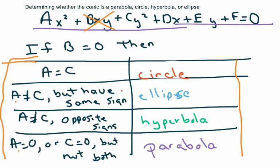So if A equals C, it's a circle. If A doesn't equal C but they have the same sign, it's an ellipse. If A doesn't equal C but they have opposite signs, then it's a hyperbola. And if A equals zero or C equals zero, but not both, then it's a parabola. So this is what we're going to be looking at.